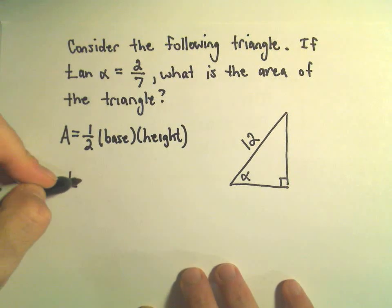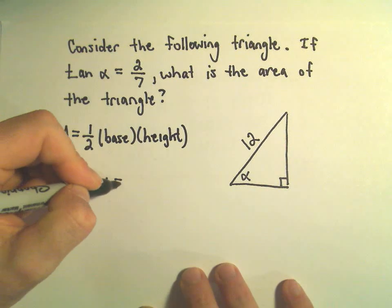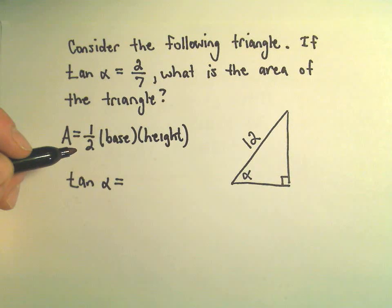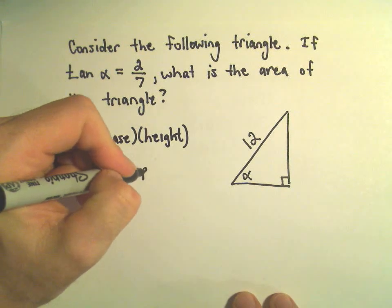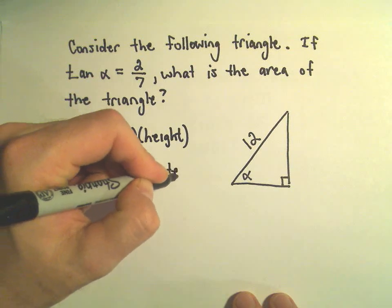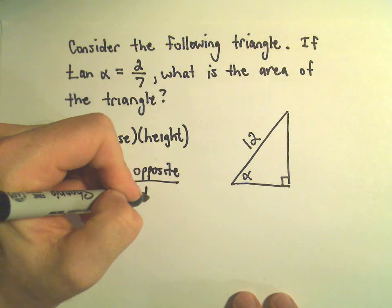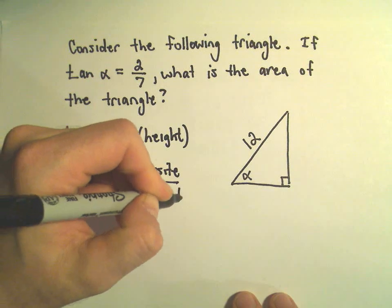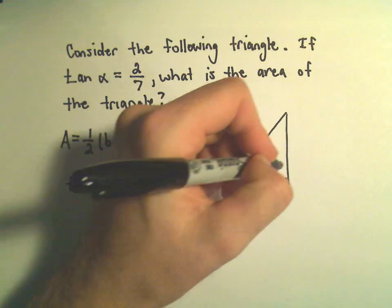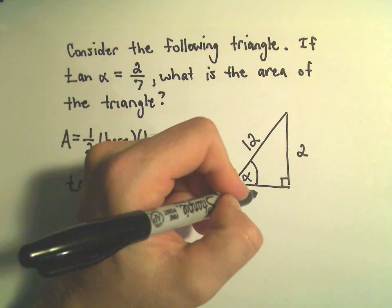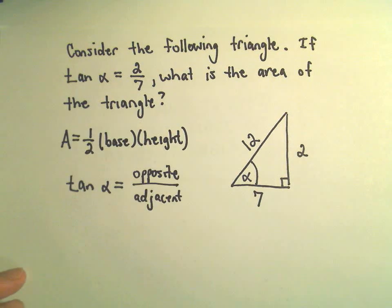All right, well we know again the tangent of alpha is 2 over 7, and remember tangent of alpha is defined to be the ratio of the length of the opposite side to the length of the adjacent side. So, you know, we've got 2 over 7. Now, it would be a mistake to simply say that the opposite side has length 2 and the adjacent side has length 7.